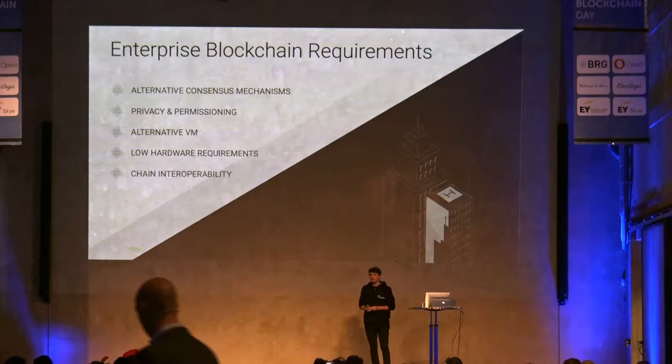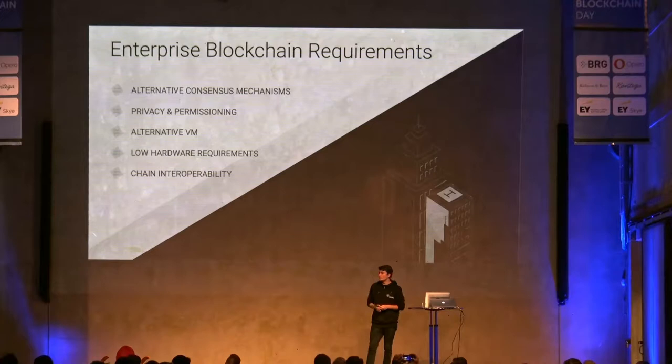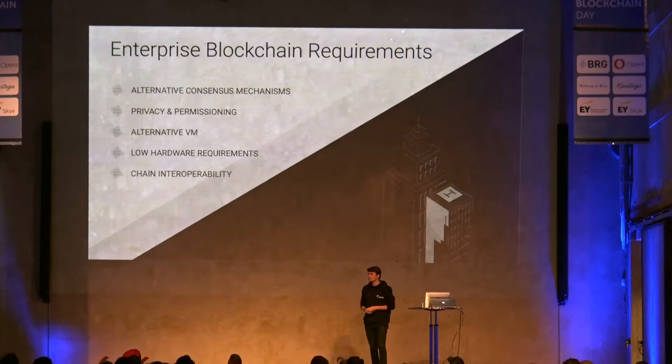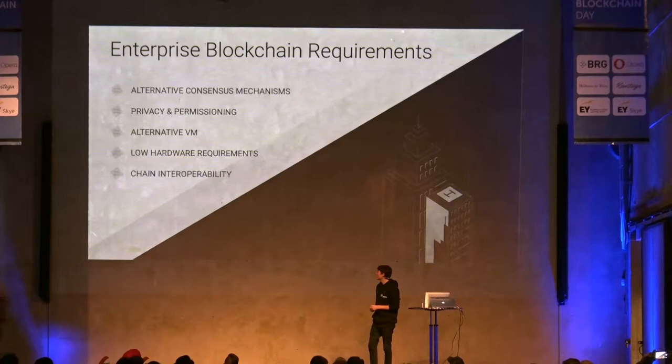So what we set out to do over the course of about a year was build protocol extensions and abstractions in this core node software to cater to those requirements. One is alternative consensus mechanisms — if you want to set up a private network, mining is probably not what you want. We were the first client implementers to abstract over consensus mechanisms, so you can plug in other mechanisms to reach consensus that do not require mining.